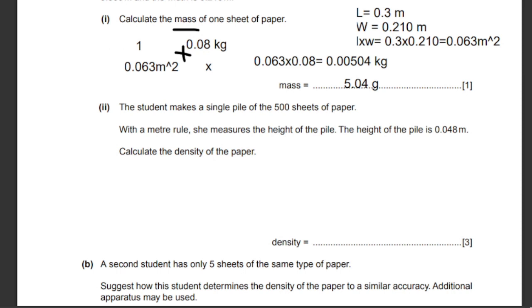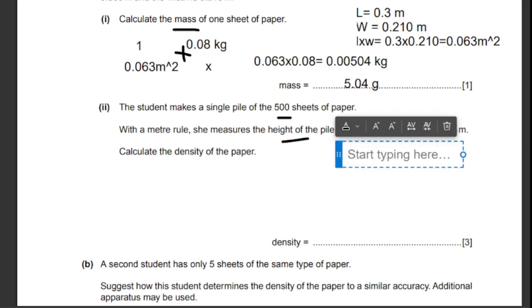Let's go to the next one. The student makes a single pile of the 500 sheets of paper. With a meter rule, she measures the height of the pile. The height of the pile is 0.048 meters. Calculate the density of the paper. We are going to start off by writing the formula of density. Density equals mass divided by volume.